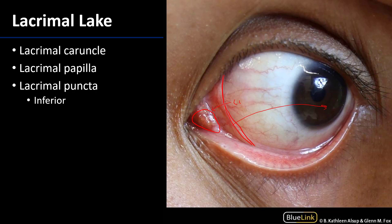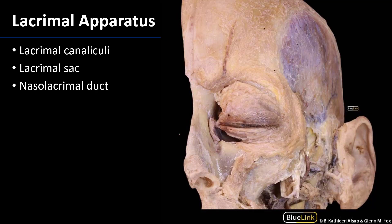Deep to the lacrimal lake, we can see the caruncle — that collection of glandular material. We can also see, at least on the inferior palpebra, the inferior lacrimal papilla. The superior one is not visible but is located on the conjunctival side of the superior palpebra. That inferior papilla hosts the inferior lacrimal puncta.